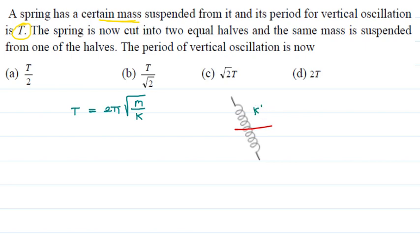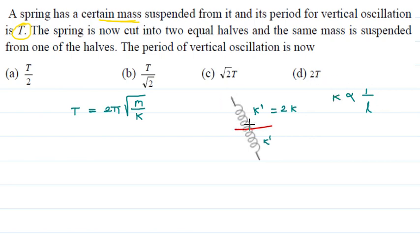When we cut the spring to half, the upper and lower portions each have spring constant k-prime. The force constant is proportional to 1 upon length. If the length is half, the force constant will double. So the new spring constant of each half equals 2k.